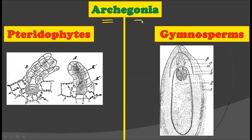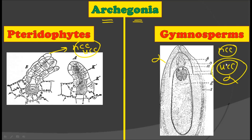The next difference relates to archegonia. In pteridophytes, the archegonia contain both neck canal cells and ventral canal cells. In gymnosperms, the neck canal cells are very much reduced and the ventral canal cells are almost absent. So from the archegonia point of view, pteridophytes possess neck canal cells as well as ventral canal cells, while gymnosperms have reduced neck canal cells and no ventral canal cells.